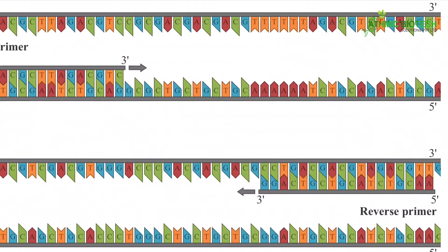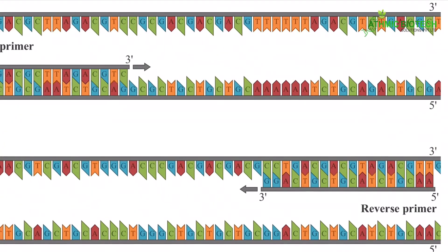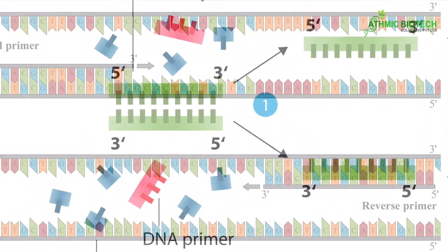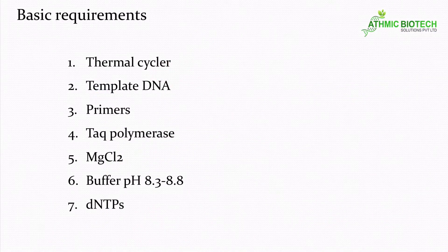And dNTPs - four dNTPs are there: adenine, thymine, guanine and cytosine. These you have to supply. So these are the basic requirements for doing a PCR.